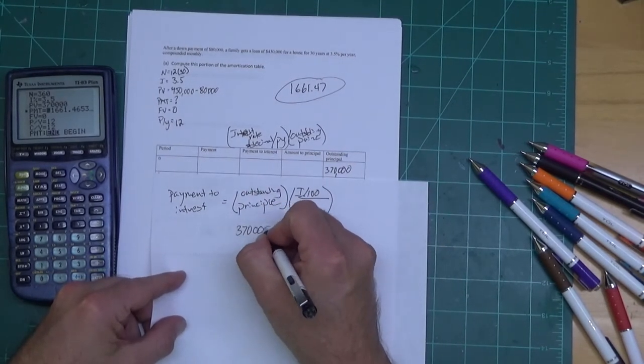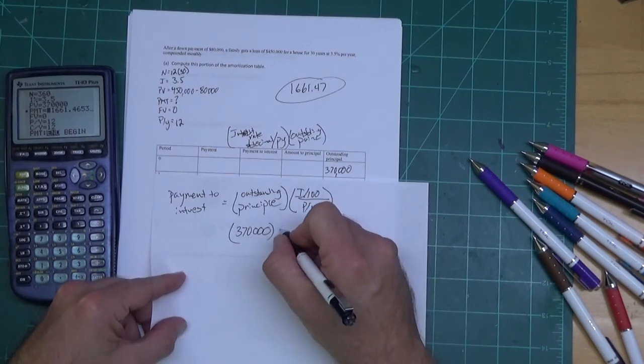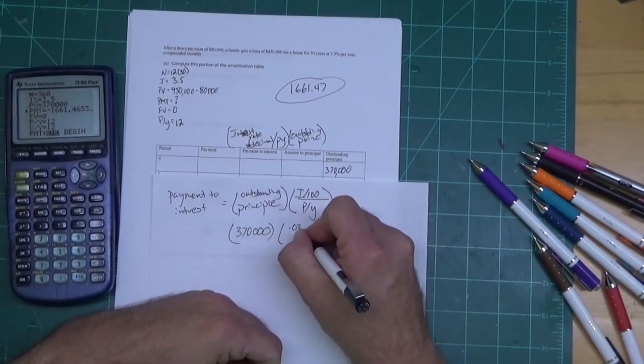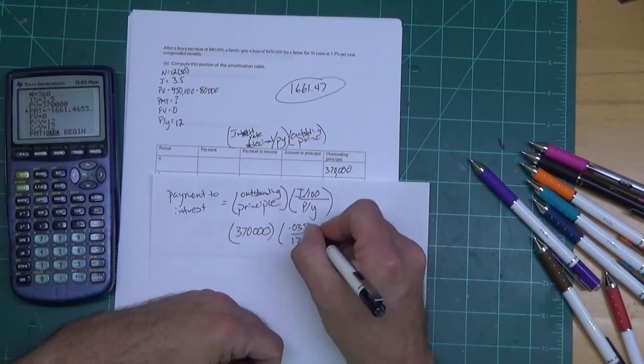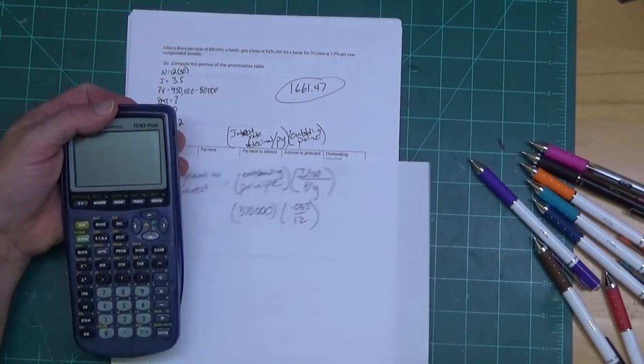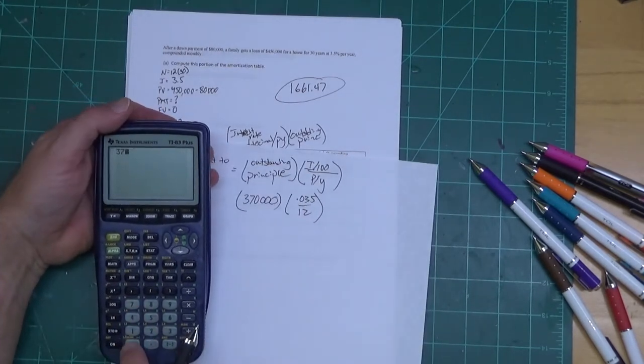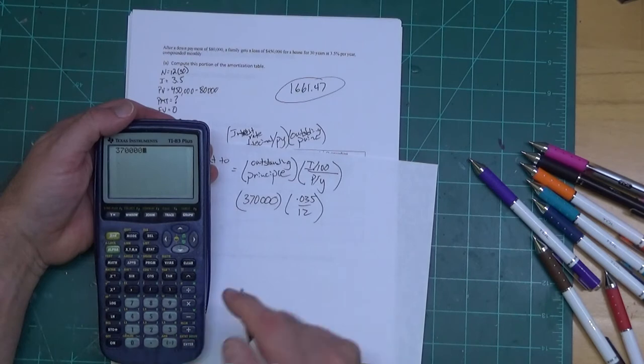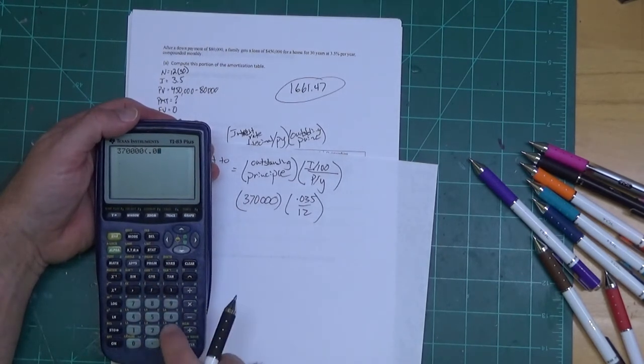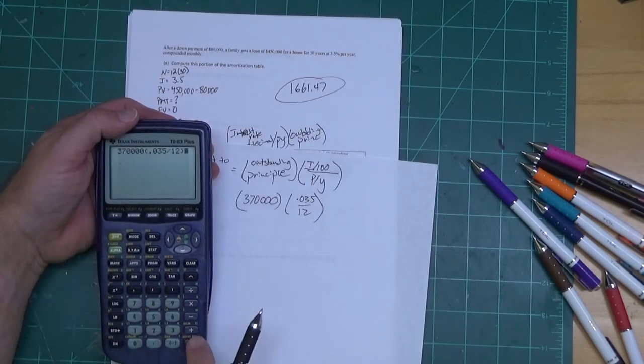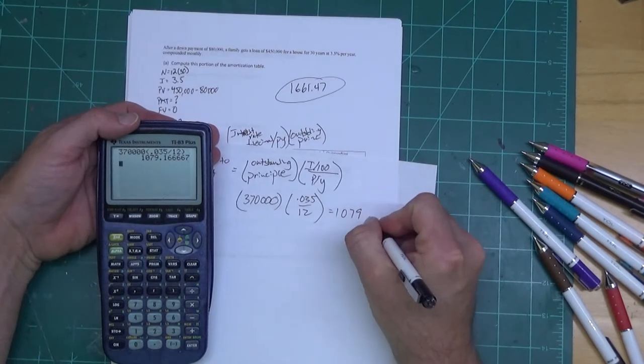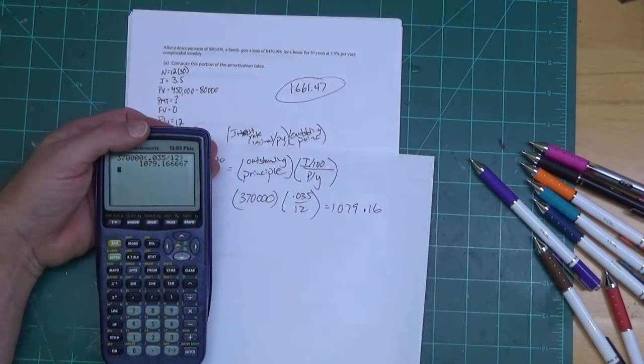For this first row, this number right here, it's going to be 370,000. Our interest rate is 3.5 percent, so when I take 3.5 divide by 100 that's 0.035 over 12. Out of the TVM solver because I don't need it for a little while - 370,000 times 0.035 divided by 12, and this gives me 1079.16.